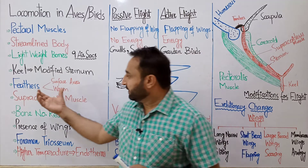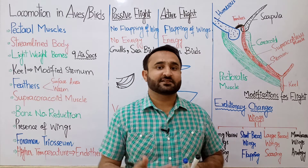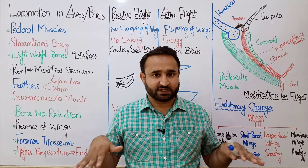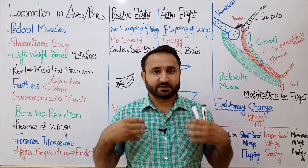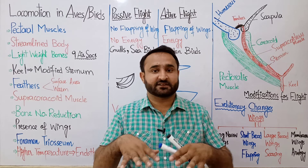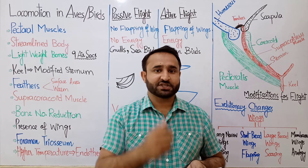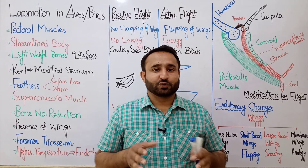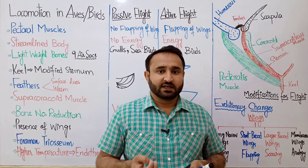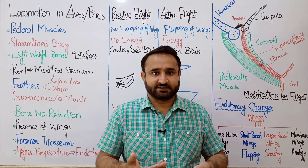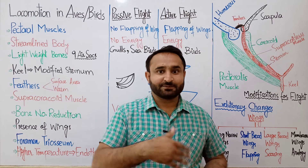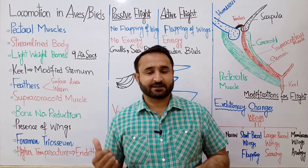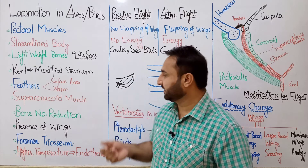उसके बाद इनमें feathers present होते हैं — wings के ऊपर, पूरी body के ऊपर feathers present हैं और smoothly present होते हैं, यानि एक तरतीब के साथ। Feathers दो function perform करते हैं: एक यह surface area को बढ़ा देते हैं जिससे overall density कम हो जाती है। दूसरी बात यह feathers body को warm रखते हैं, जिसके वजए से birds endothermic हैं — body temperature high रहता है, enzymes को optimum temperature मिलता है, enzymes better activity करते हैं और ज्यादा energy provide करते हैं। Flight एक energetic process है तो इसके लिए ज्यादा energy चाहिए।